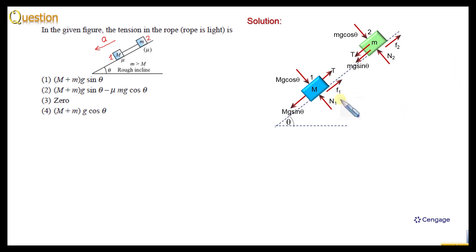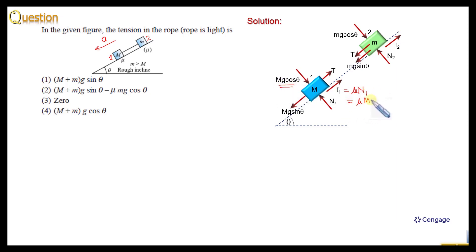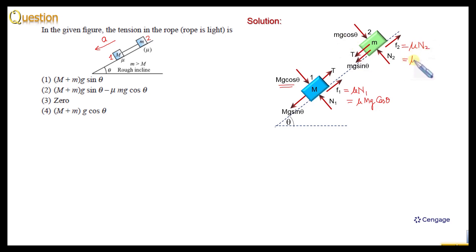Now we can write the values of F1 and F2. F1 is μ multiplied by N1, and N1 is equal to Mg cosθ, so F1 is μMg cosθ. Similarly, F2 is equal to μ multiplied by N2, and N2 is equal to mg cosθ, so F2 is μmg cosθ.